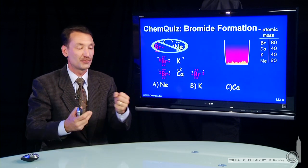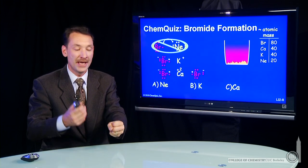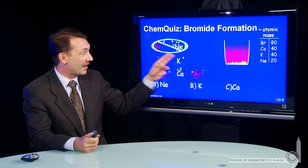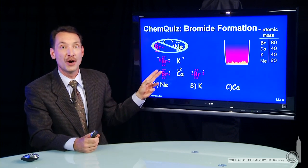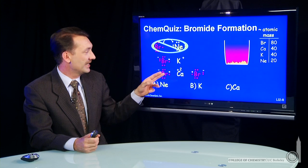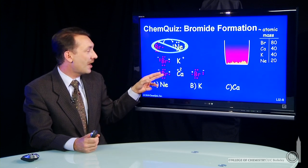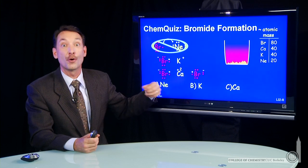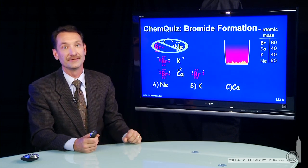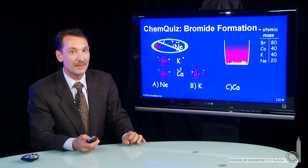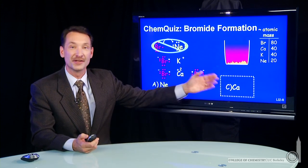Calcium will go to plus two and each of the bromines to minus one. So you have a Coulombic interaction between the plus two calcium and the two minus bromines. So this compound has a total mass of 200, 80, 80, and 40. And 160 of that 200, or 80%, is bromine. So here's a bromide that's 80% bromine by mass, and it's formed with calcium.